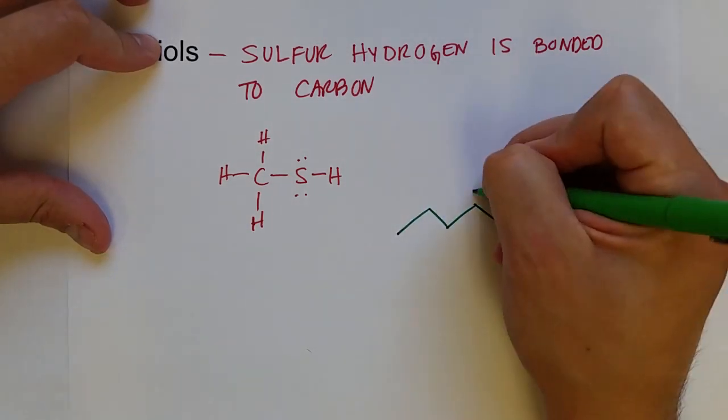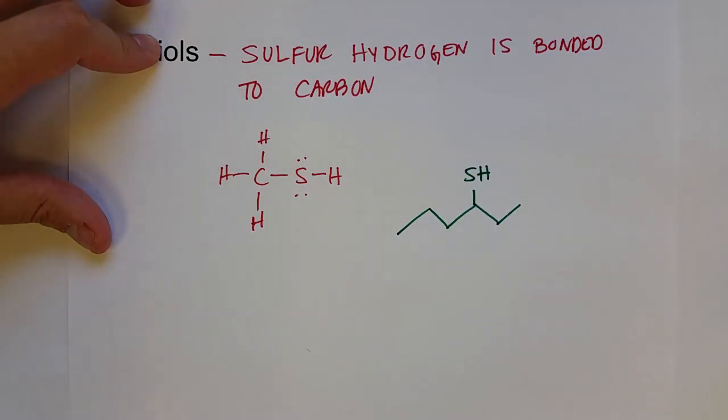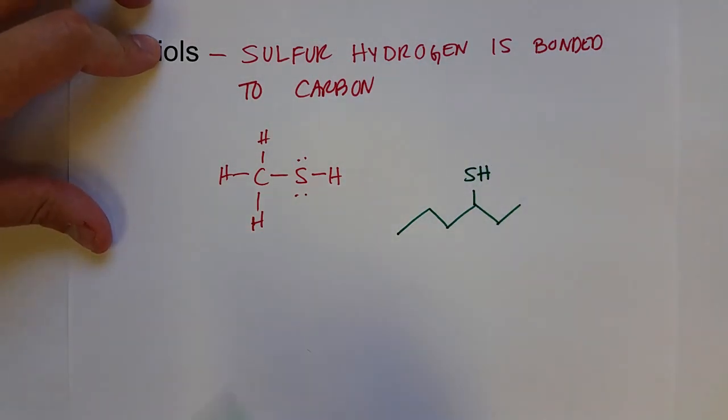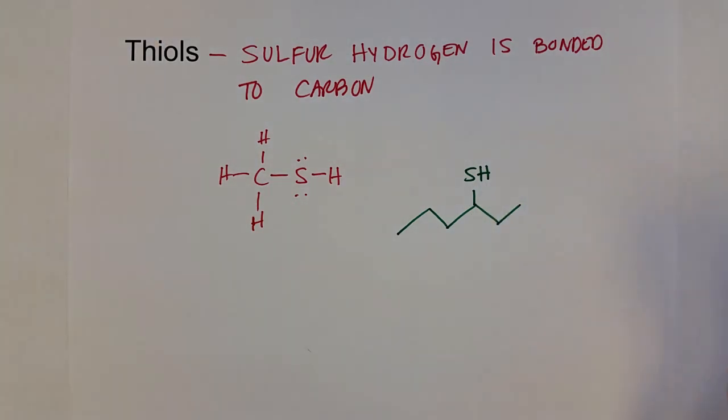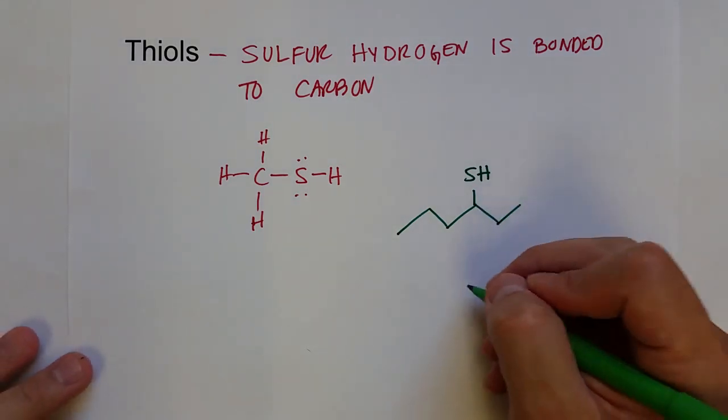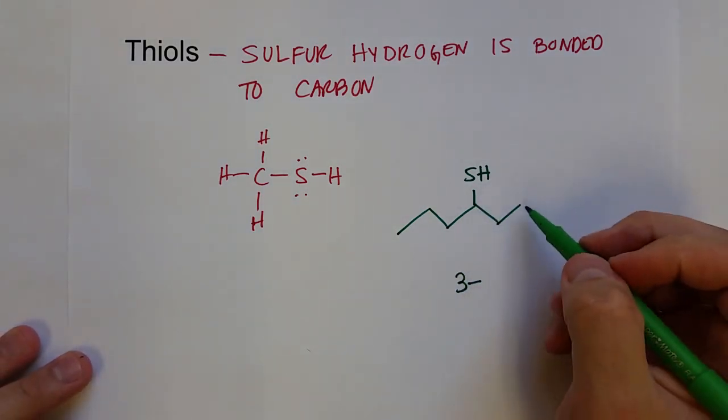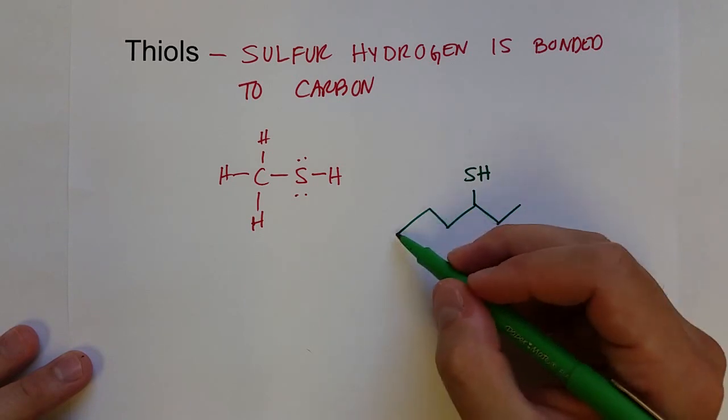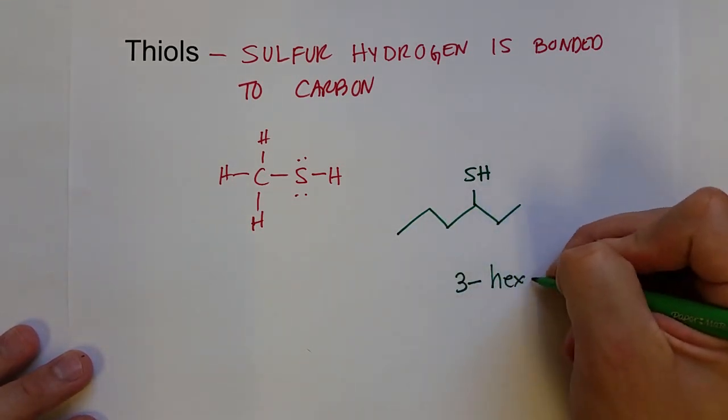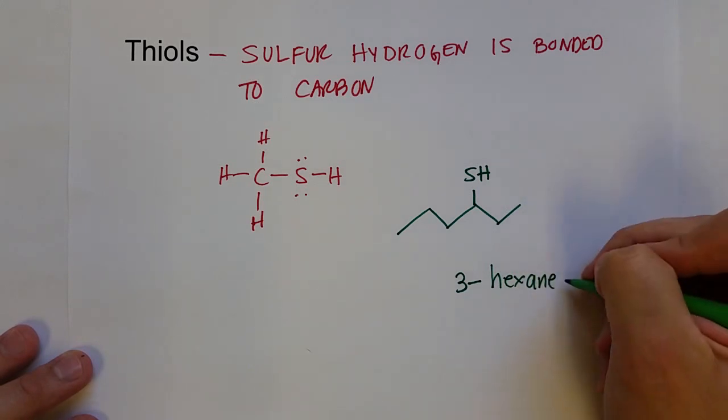You can have this anywhere on a hydrocarbon, and you would draw it just like you drew the OH group—you definitely draw the S and then the H that's connected to it. You would name it in a very similar fashion. So this would be one, two, three, four, five, six—that's hexane thiol.